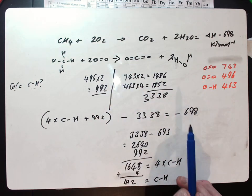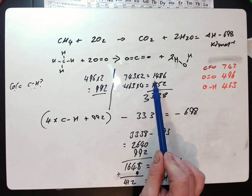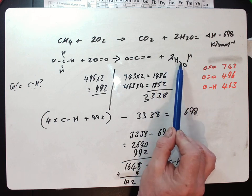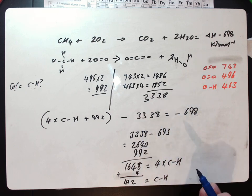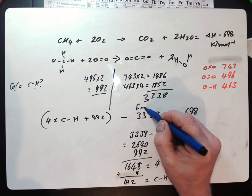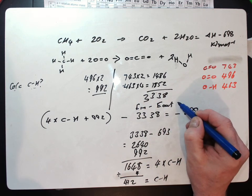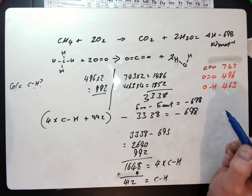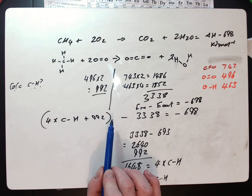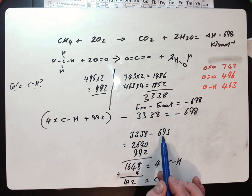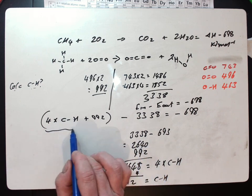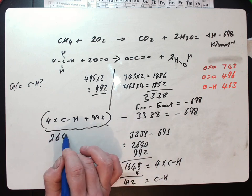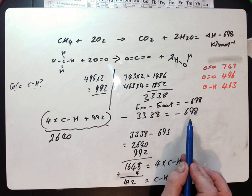We've got two oxygen bonds, both at 496, so we've doubled that on that side. Then if we look at the bonds being made, we have our two C=O bonds at 1486 here. Our four O-H bonds, two times two O-H at 1852, gives us a total of 3338. So energy in minus energy out equals minus 698. If we do 3338 minus 698, that means the left hand side in total has got to be 2640. So 2640 minus that gives me minus 698.